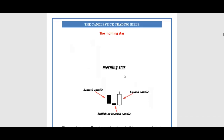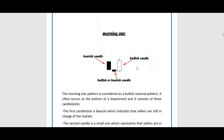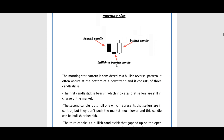Now we have another candlestick pattern known as the morning star. The previous candlestick patterns we looked at involved two candlesticks, however the morning star now has three. So we're looking at three candles to form the morning star. It consists of a bearish candle pushing down, a small candle again, and then a bullish candle pushing upward — this three-candle combination is what we call the morning star.